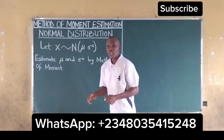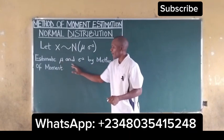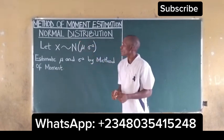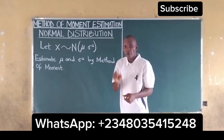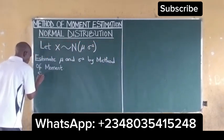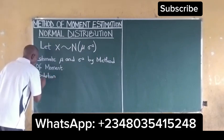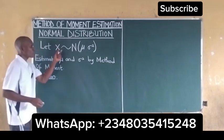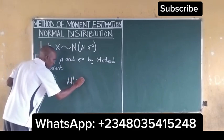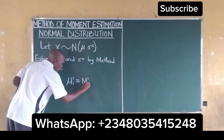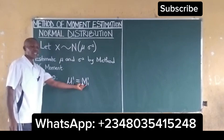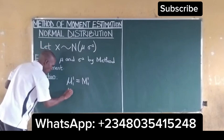In this video we shall estimate mu and sigma squared by the method of moments from the normal distribution. Since we are estimating two parameters, we will have mu_1_1 equal to m_1_1, meaning the population mean for the first moment will be equal to the sample mean for the first moment.